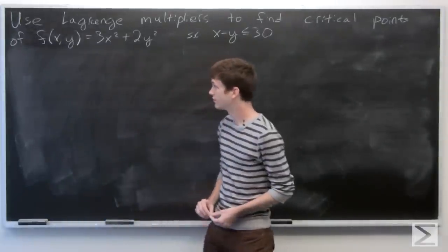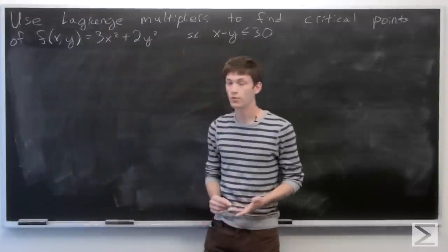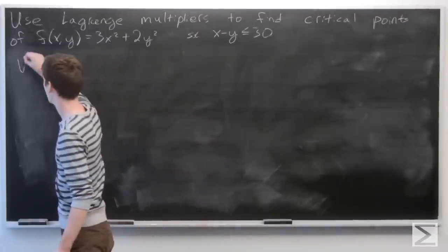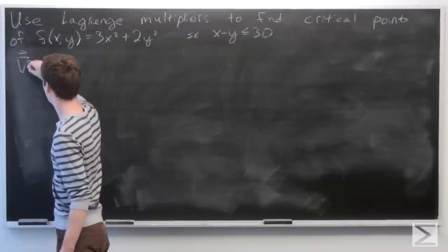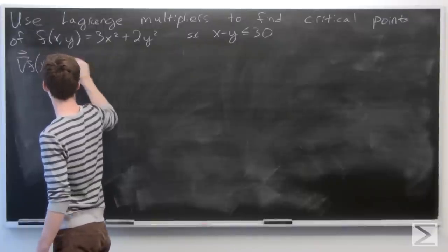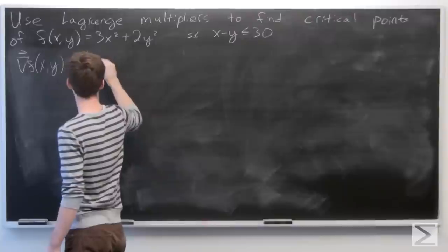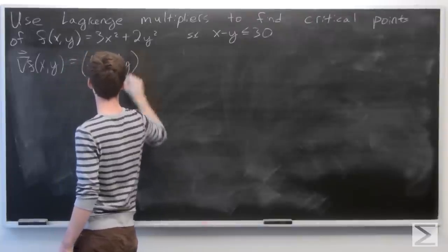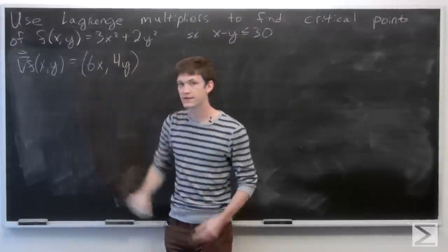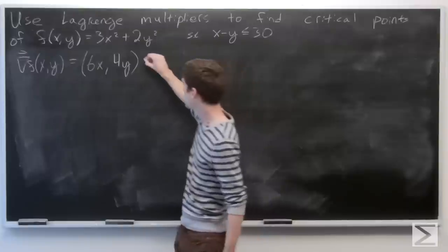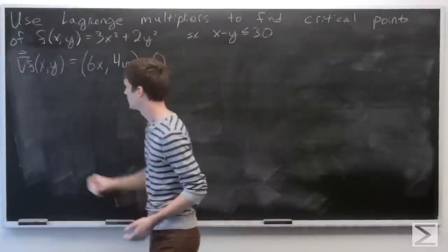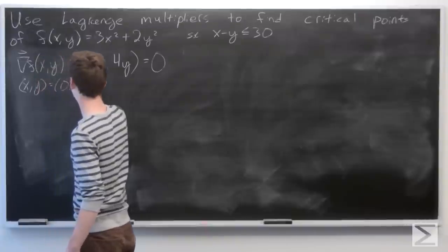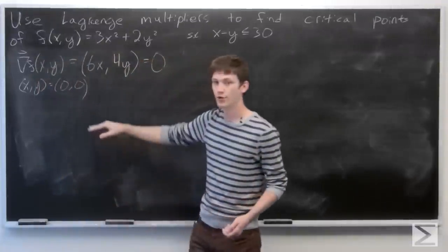First we want to see where f has critical points, and that's when the gradient vector is equal to 0. So our gradient vector of f is 6x comma 4y, and that equals 0 when x and y are both 0.